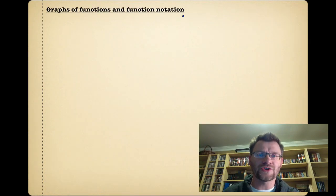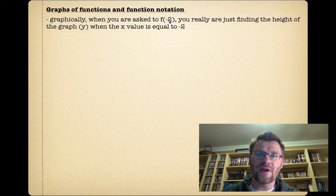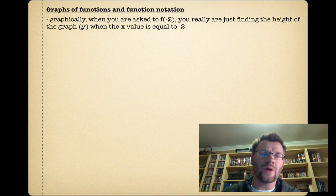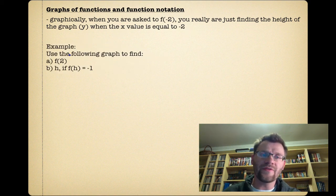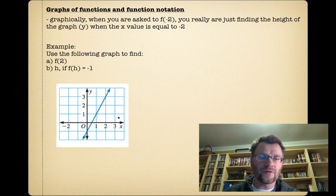Graphs of functions and function notation. So graphically, when you're asked to find something like f(-2), you really are just finding the height of the graph, which we usually call y. In this case, it's f(x), when the x value is equal to -2. For example, it says use the following graph to find f(2), and then to find h if f(h) is equal to -1.